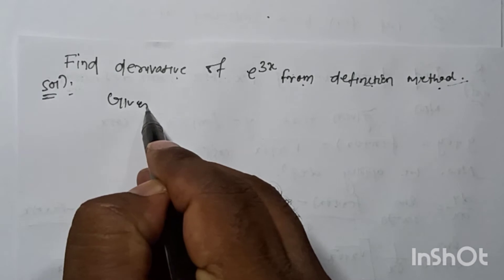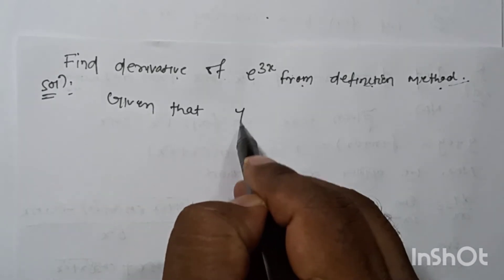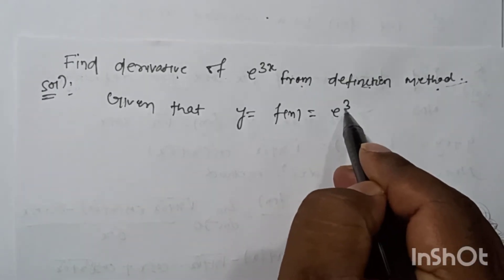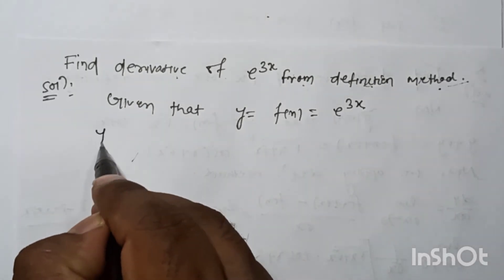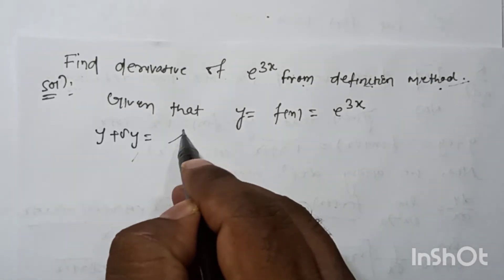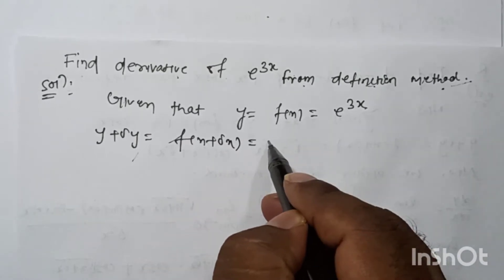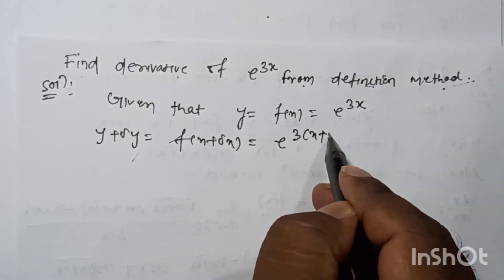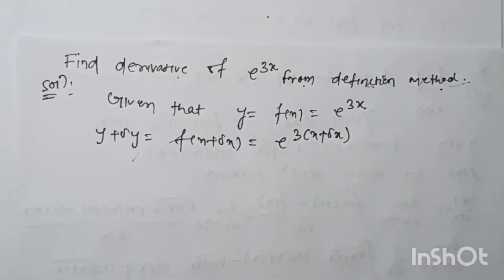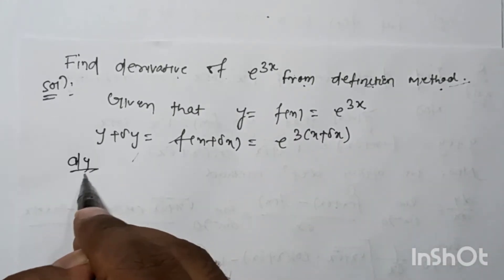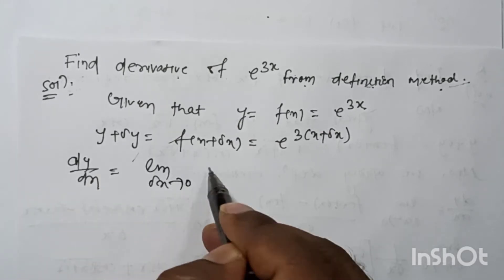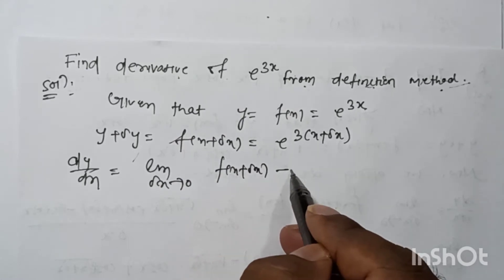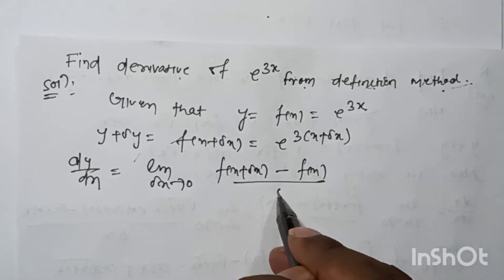Given that y = f(x) = e to the power 3x. We can write y plus δy = f(x + δx) = e to the power 3(x + δx). We know that dy/dx by the first principle method is: limit as δx tends to 0 of [f(x + δx) minus f(x)] divided by δx.